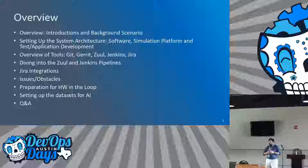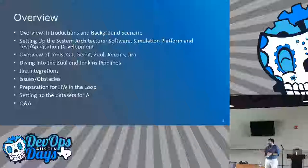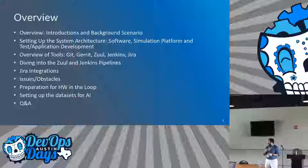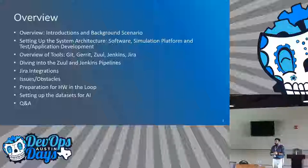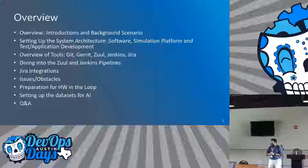You have the software, you have the simulation platform, and the test and application development taking place. We'll cover most of the tools we've used: Git, Gerrit, Zuul, Jenkins, and Jira. A shout out to the previous speaker — they work for OpenStack, that's where we picked up Zuul from. It's a great pipelining tool for us.